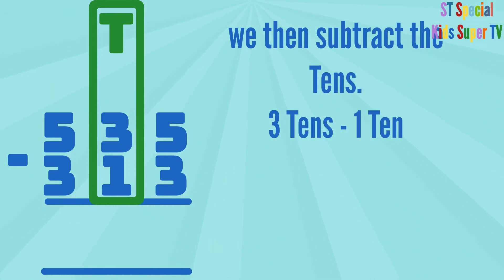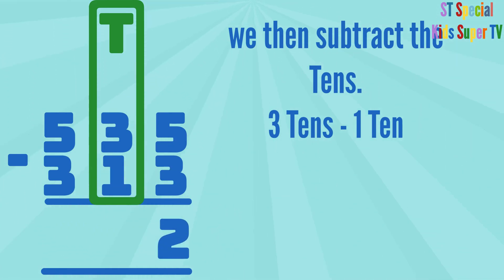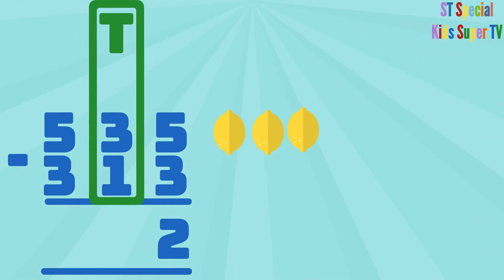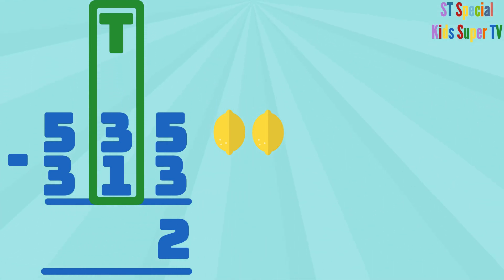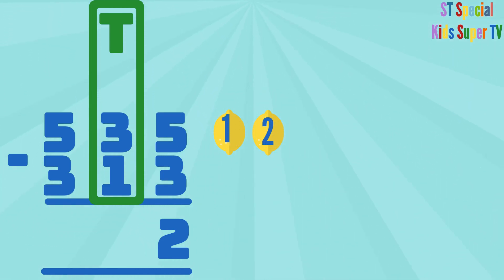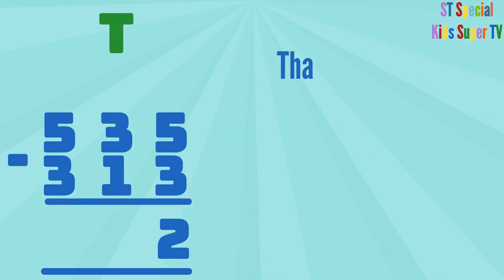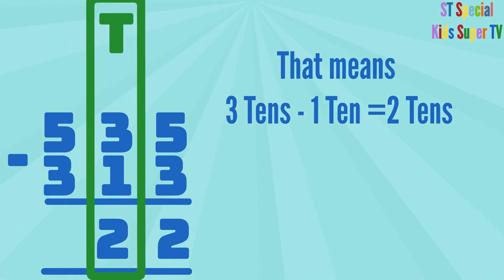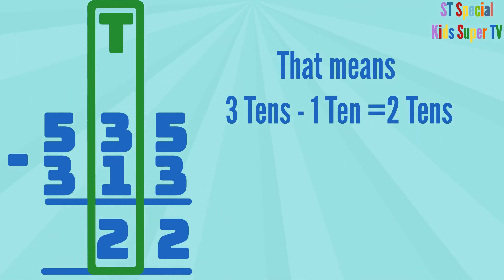We then subtract the 10s: 3 tens minus 1 ten. 1, 2, 3 lemons minus 1 lemon equals 2 lemons. That means 3 tens minus 1 ten equals 2 tens. So you write the 2 under the tens column.